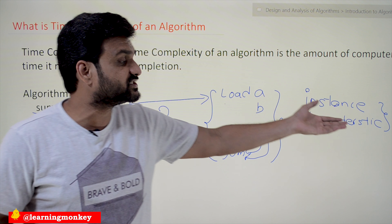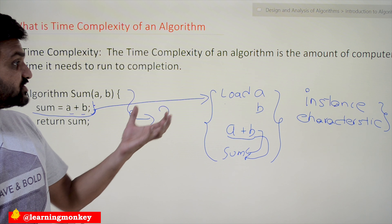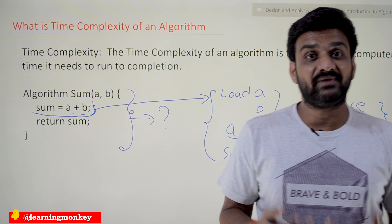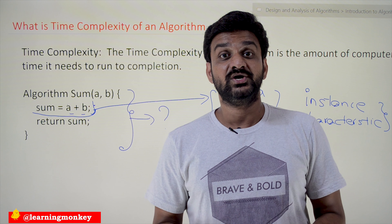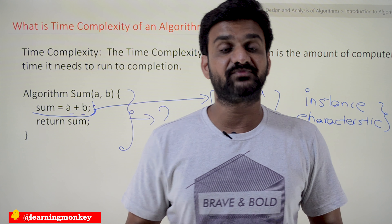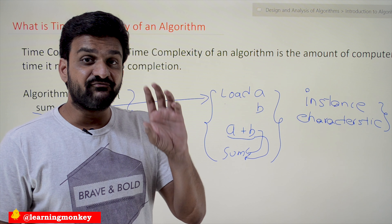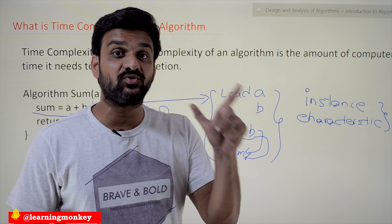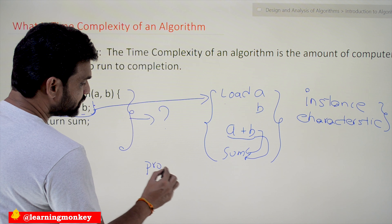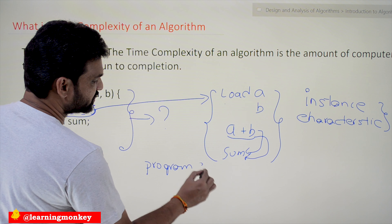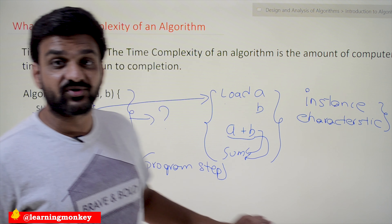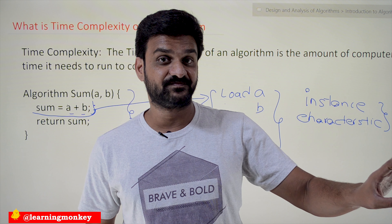Based upon these instance characteristics, we can find the execution time — but is it feasible? No, it is not feasible. So how are we going to find the time complexity of an algorithm? The very important concept we need to understand is the program step. What is meant by a program step? We will try to understand this in our next class.